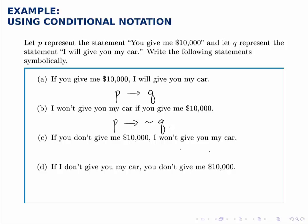The third statement says if you don't give me $10,000, I won't give you my car. The if here goes with the first half, so you don't give me $10,000 is the condition, and I won't give you my car is the result or the implication. You don't give me $10,000 is not P, so we write not P, implies I won't give you my car, which is not Q.